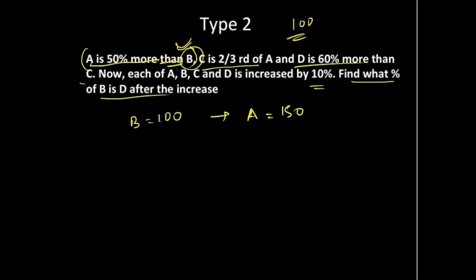C is 2/3rd of A, so C becomes 2/3 of 150. This gets cancelled out, so C becomes 2 times 50, which is 100.